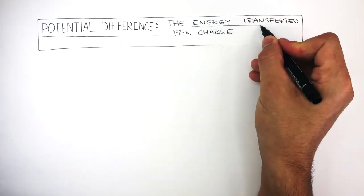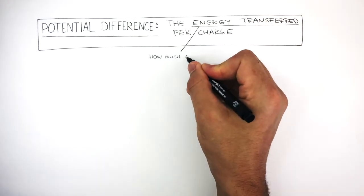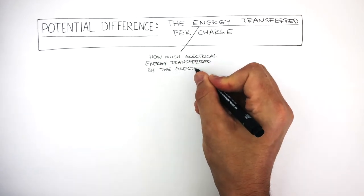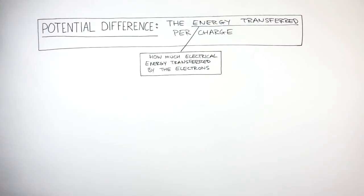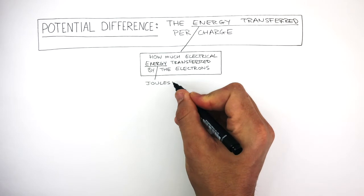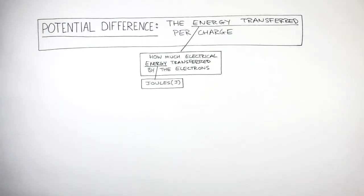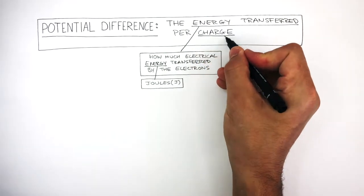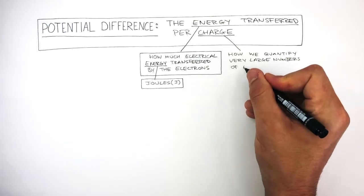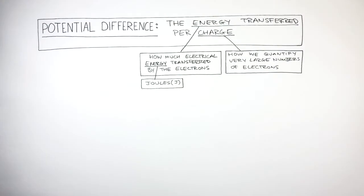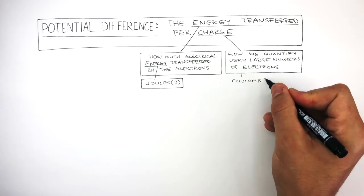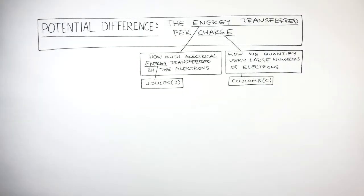Energy transferred means how much electrical energy is transferred by the electrons. The unit of energy is joules and the symbol is a capital J. Charge is how we quantify a very large number of electrons. The unit of charge is coulomb and the symbol is a capital C.